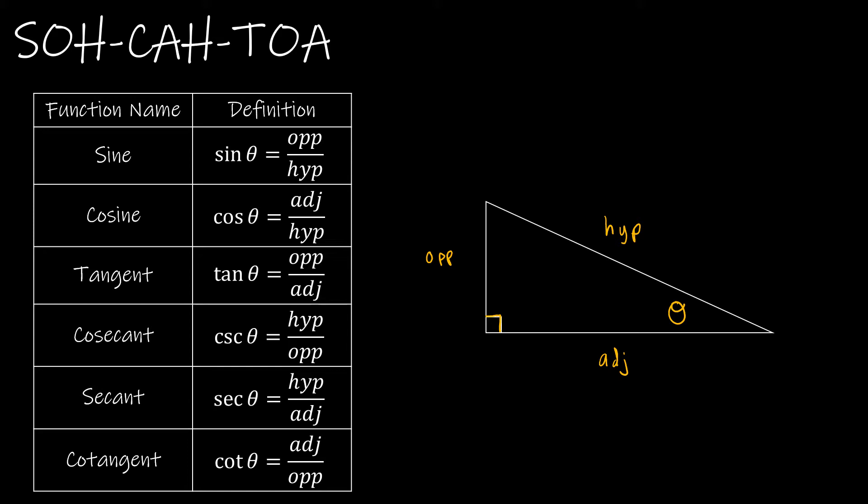When we define our trig functions, sine is opposite over hypotenuse, which is SOH. Cosine is adjacent over hypotenuse, which is CAH. And then tangent is opposite over adjacent, which is TOA. So SOHCAHTOA is a handy little way to remind you which one is which.